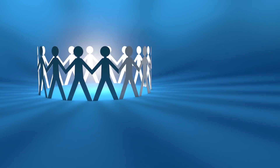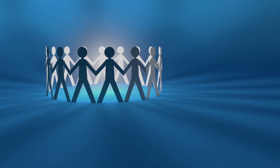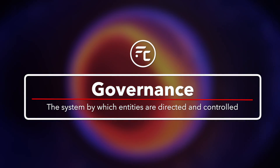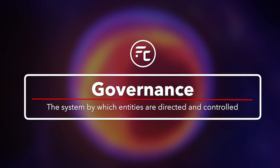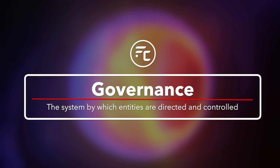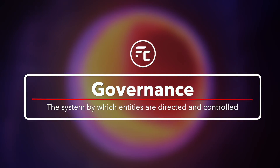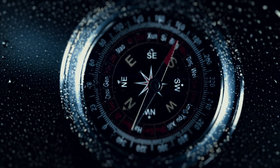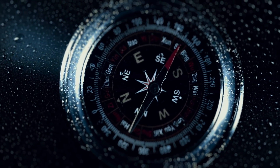So first, let us define governance. Governance can be defined as the system by which entities are directed and controlled. Governance is a process of decision-making for a particular entity — in this case, the Flare network. Governance will influence how the Flare network's objectives are set and achieved, and how performance is optimised.